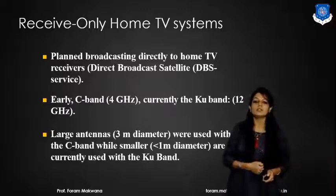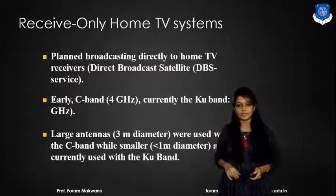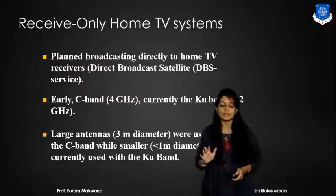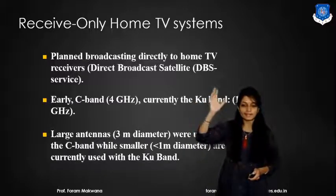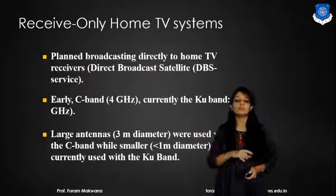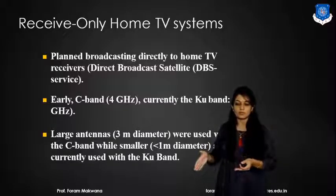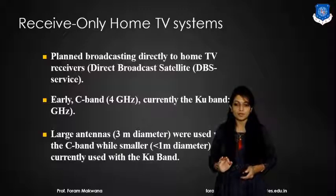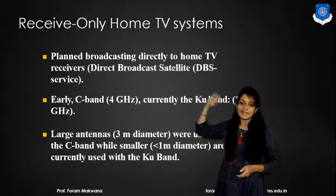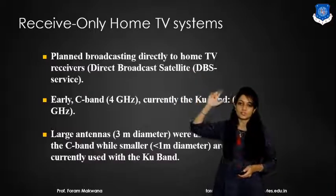The receive-only home TV system — what does it mean? It is basically the example of a dish TV antenna, in which there is one antenna mounted on our terrace and the signal is received by that antenna, and fed through a television inside our home via the set-top box. It is a planned broadcasting directly to home television receivers. We can also call it the direct broadcast satellite service.